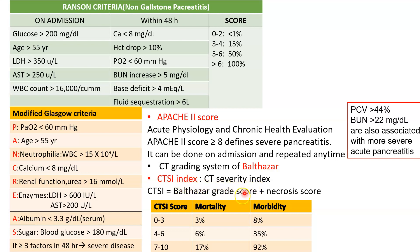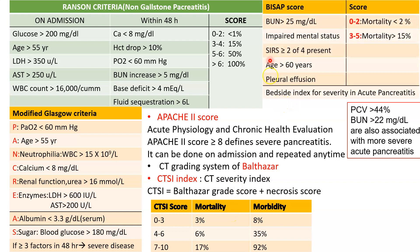The CT severity index tells us the mortality and morbidity of the patient. In the emergency, the BISAP score is commonly used to triage patients. It assesses BUN over 25, impaired mental status, presence of SIRS, age over 60, and any pleural effusion — each criterion scoring one point. Additionally, a hematocrit over 44% and BUN over 22 are associated with more severe acute pancreatitis.